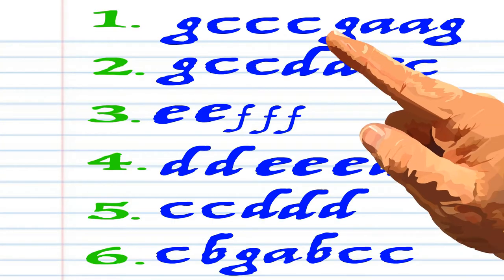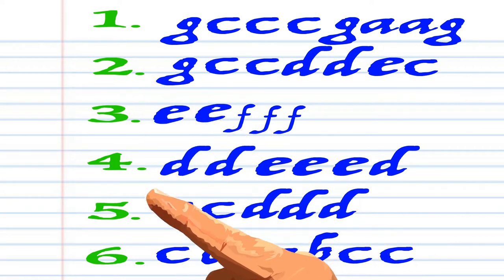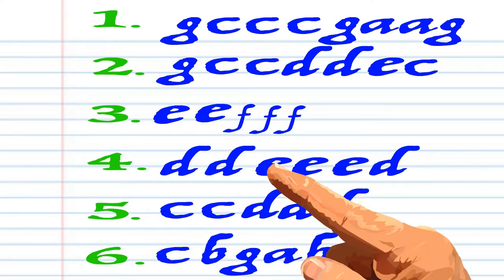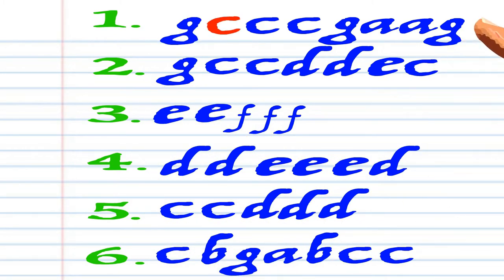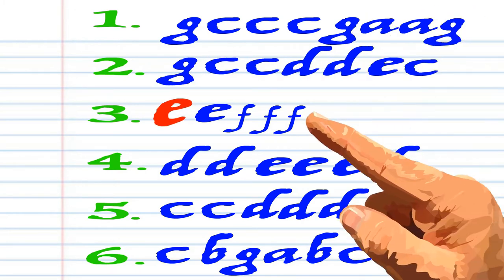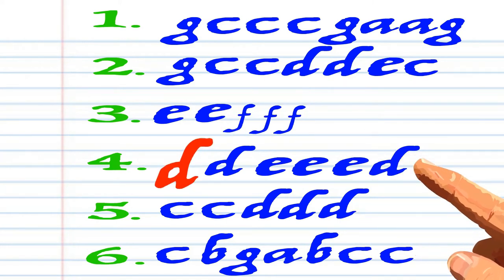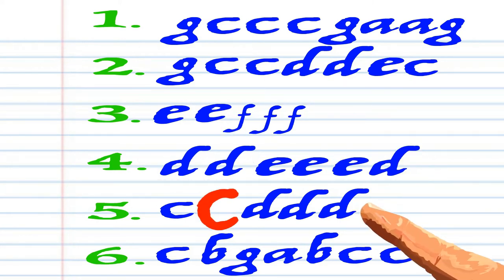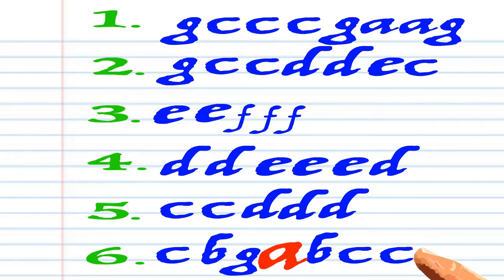Here's what Bingo looks like when it's written down in the key of C, and here is how it sounds. G-C-C-C-G-A-A-G-G-C-C-D-D-E-C-E-E-F-F-F-D-D-E-E-E-D-C-C-D-D-D-D-C-B-G-A-B-C-C.